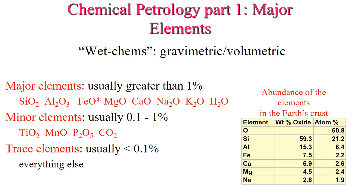We also have to define minor elements, which are going to be between 0.1 and 1% of the rock. These are going to include titanium, manganese, phosphate, and carbon dioxide. In the next few lectures we'll discuss minor elements more, as well as trace elements. When we define a trace element, we're defining it as anything between 0.1 and 0% of the total volume of the rock, and that's going to include everything else in the periodic table.